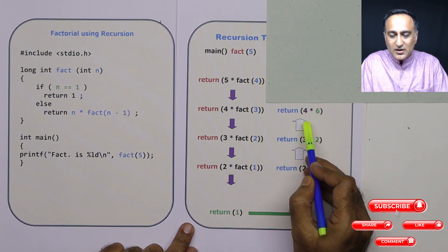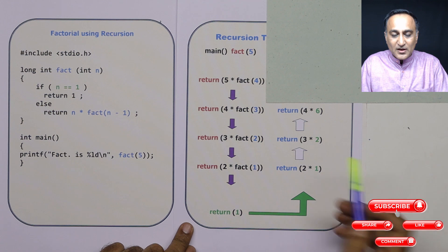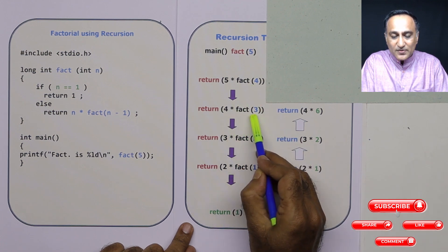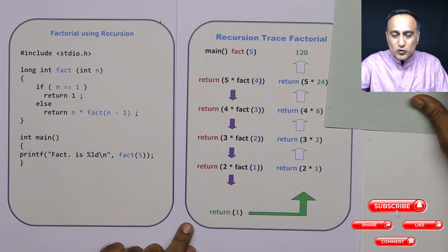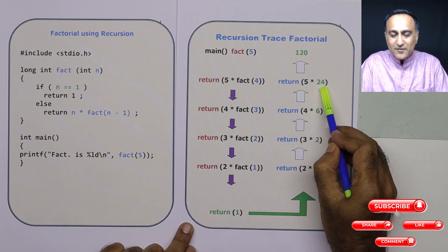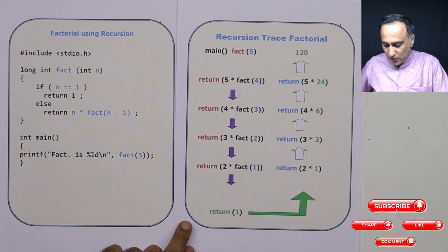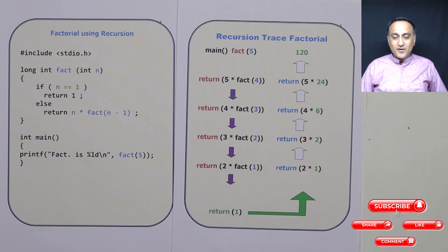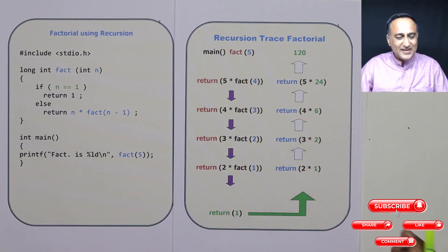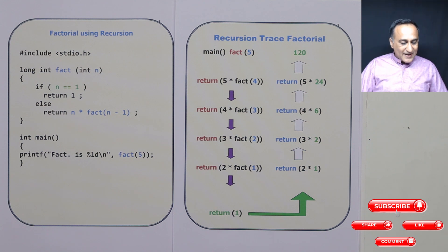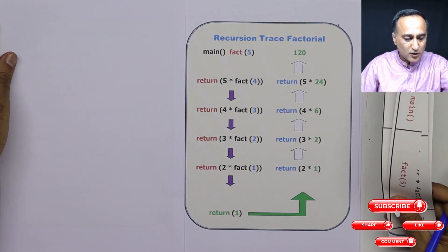I can now replace factorial of 3 with 6. Factorial of 4 is 4 into 6, which happens to be 24. So factorial of 4 is 24. I can replace factorial of 4 with 24 in the return statement. So now it becomes 5 into 24. I already know factorial of 4, so 5 into 24 is 120. This is how I calculate the factorial of 5. This recursion trace is really important — if you can follow it, it's easy.